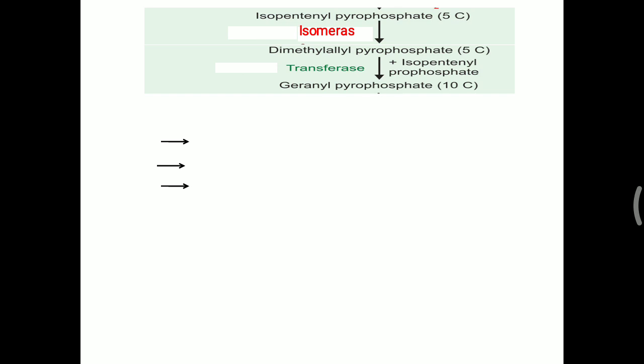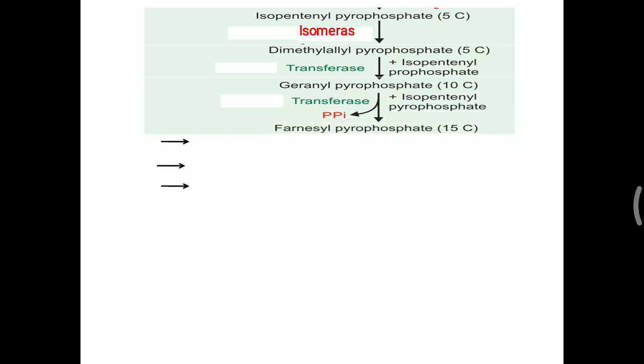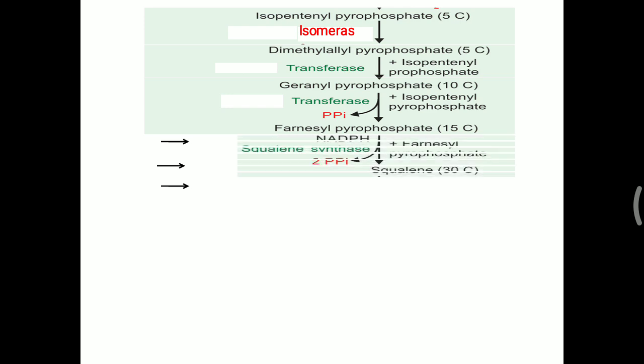DMAPP and IPP combine to make a 10-carbon molecule called geranyl pyrophosphate (GPP). This GPP further combines with one more IPP molecule (with removal of a pyrophosphate) to form the 15-carbon molecule farnesyl pyrophosphate (FPP). Two molecules of FPP (15C + 15C) then combine via squalene synthase, with removal of pyrophosphate, to produce the 30-carbon molecule squalene. This overall process is the condensation of five-carbon units.